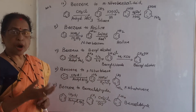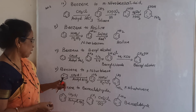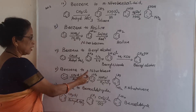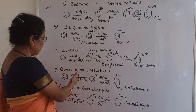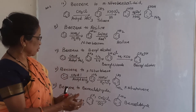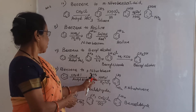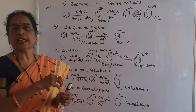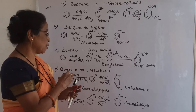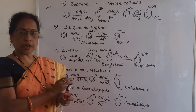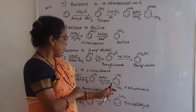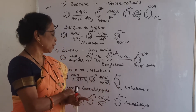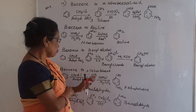Benzene to para-nitrotoluene: first convert benzene to toluene using CH3Cl and anhydrous AlCl3. The methyl group (CH3) is an ortho-para director, so when you treat toluene with concentrated HNO3 and H2SO4, you get both ortho and para products, but the major product is para-nitrotoluene.